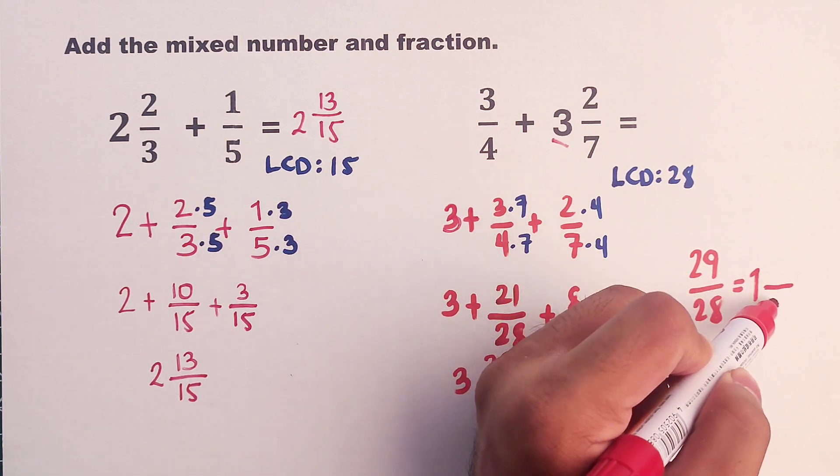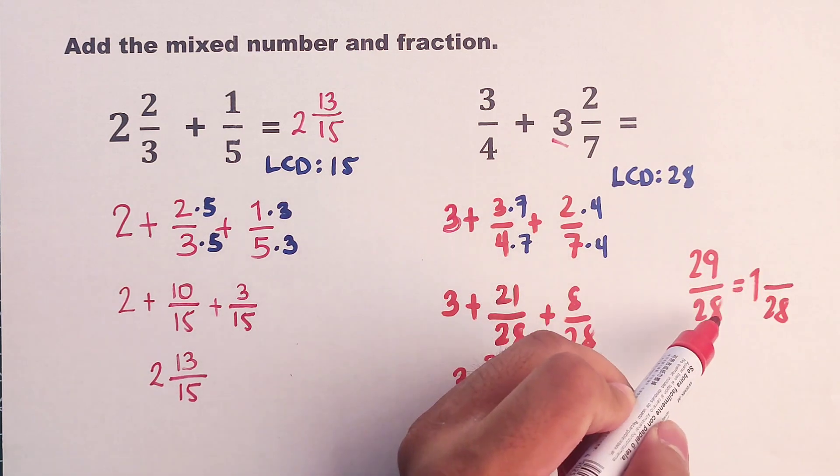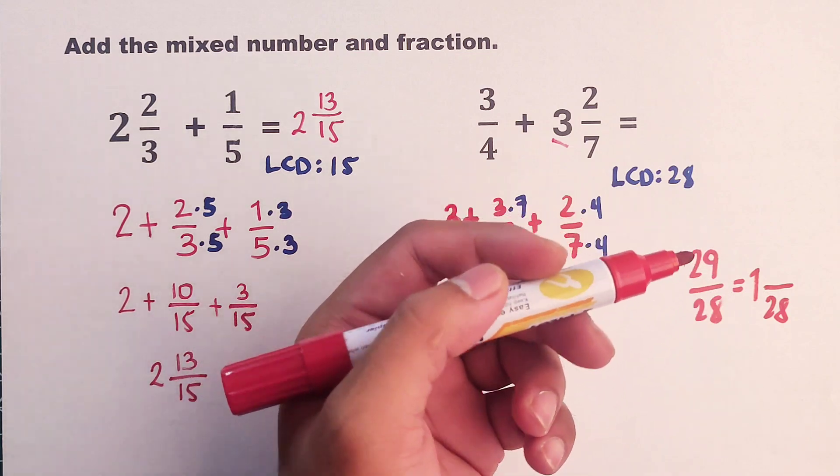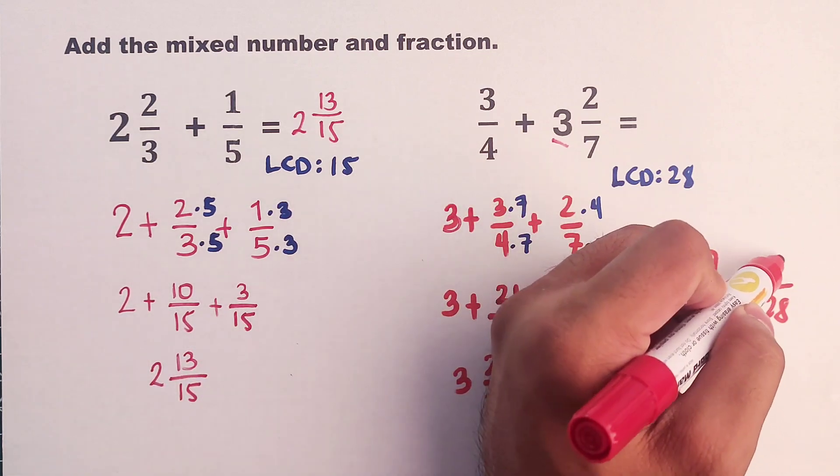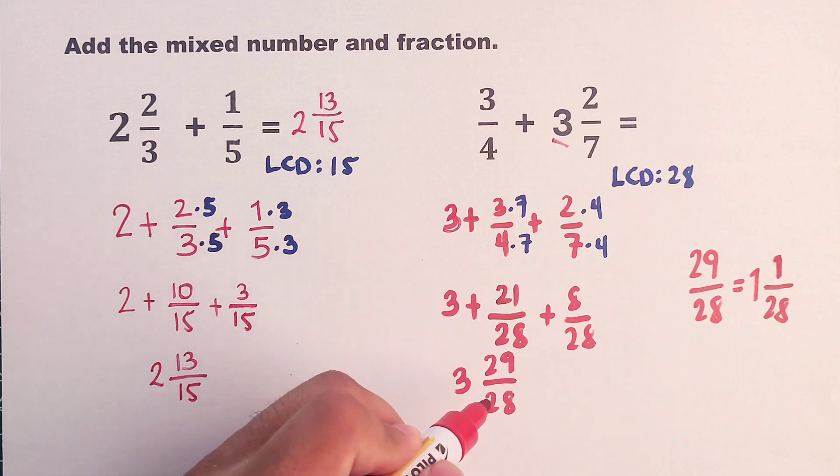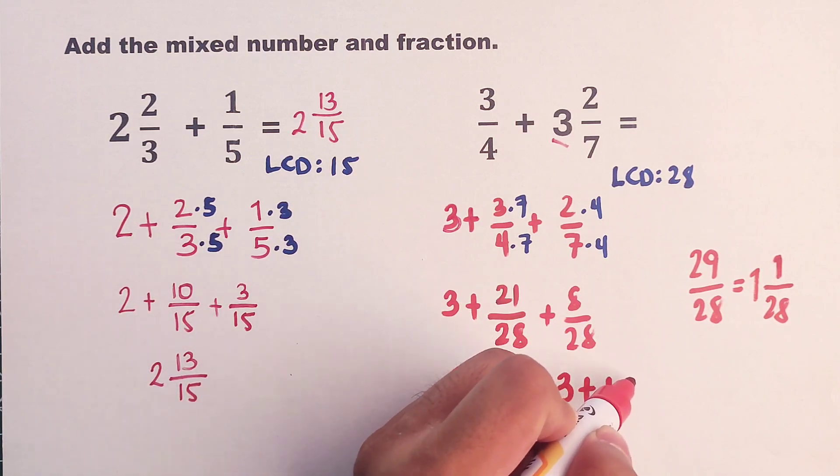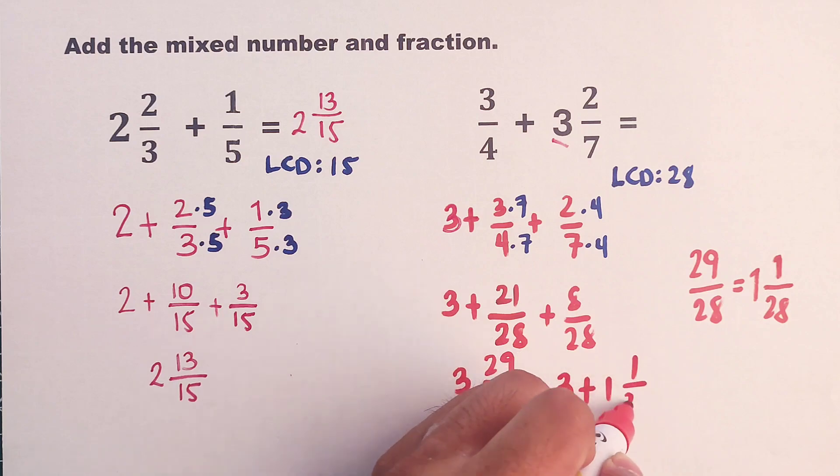And I will copy 28. Then, as for this numerator, there's 1 that will remain. So meaning, this must be 3 plus 1 and 1 over 28.